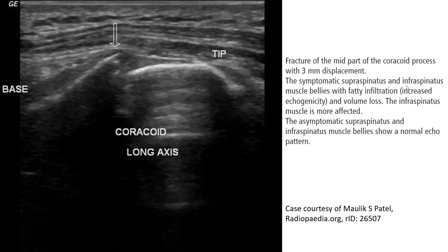This is an example of an ultrasound of the coracoid process, which we can see in this view. The arrow indicates the coracoid alignment — this is a fracture.